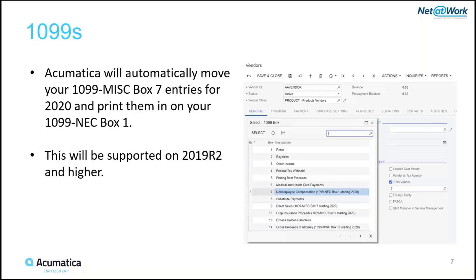This is only supported on version 2019 R2 and higher — that's really important. If you're on 2019 R1 or lower, you have to do an update. We do have some workarounds: we can set up a sandbox so you can do your 1099s once your year is done, or we can upgrade your system as a standalone. The best thing is to make sure you're on 2019 R2, and there is plenty of time to get that done in the next 30 to 45 days.